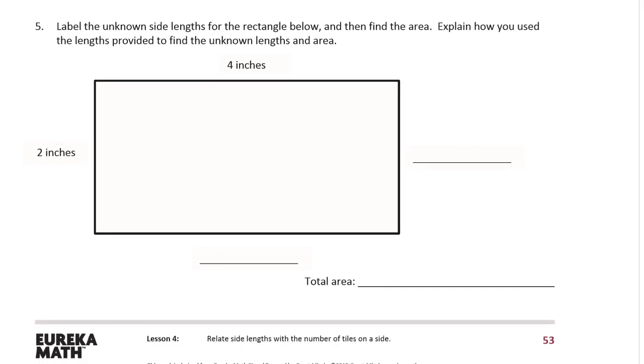Label the unknown side lengths for the rectangle below and then find the area. Okay, so explain how you use the lengths provided to find the unknown lengths and area.